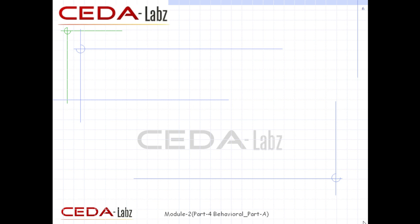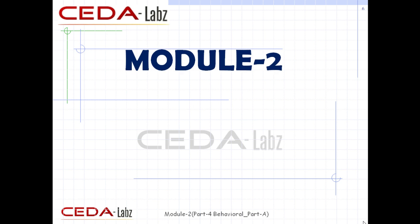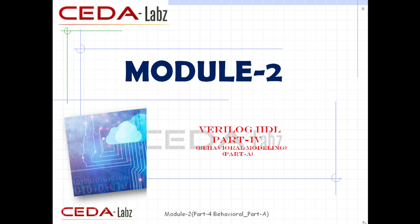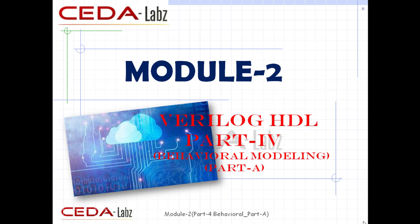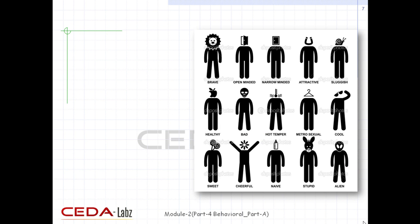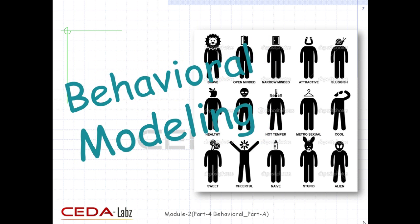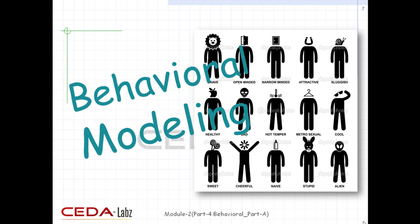In this tutorial we will learn the next level of abstraction, that is behavioral modeling. This tutorial is divided into two parts, Part A and Part B. Part A consists of structured procedures, procedural assignments, timing control statements, and block statements. The rest we will study in Part B.